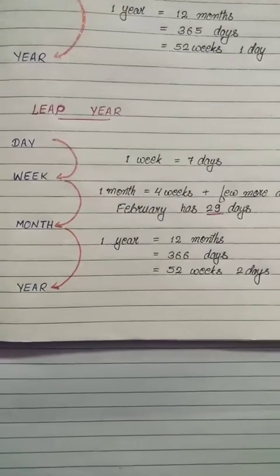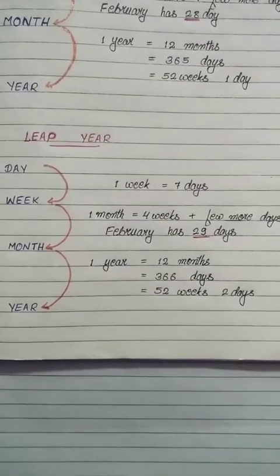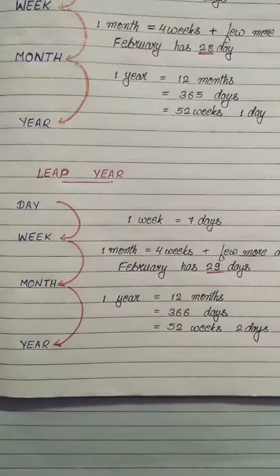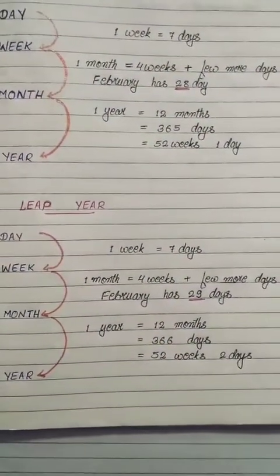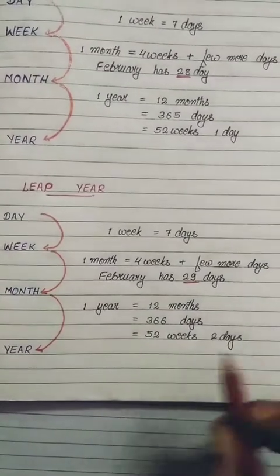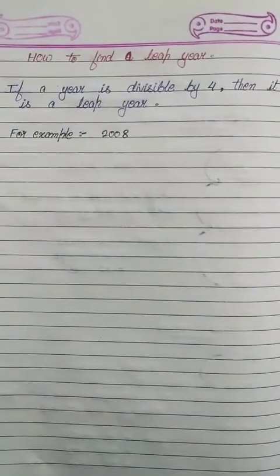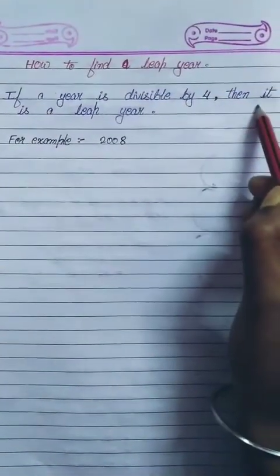Now let's learn about leap year. Children, in a leap year everything remains the same except February has 29 days. Therefore in a leap year there are 366 days, which is 52 weeks and two days.